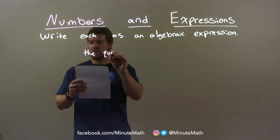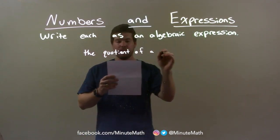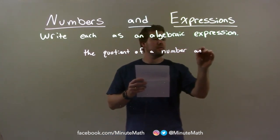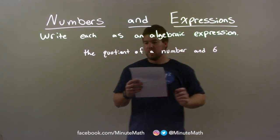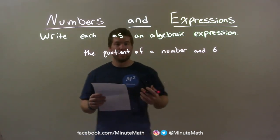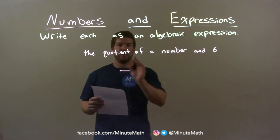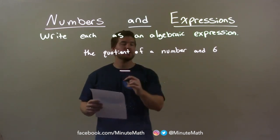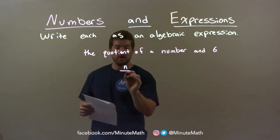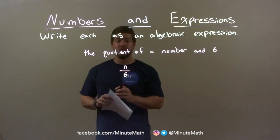The quotient of a number and 6. So we have the quotient of a number and 6. Well, with the quotient, that's going to be division. So I'm going to make a fraction here — the quotient of a number, let's call it n, and 6 underneath. Our final answer: n divided by 6.